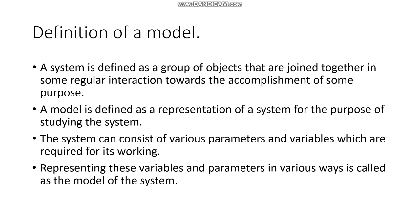A system can consist of various parameters and variables which are required for its working. Representing these variables and parameters in various ways is called a model of the system. So basically, in order to understand the system better, we need a representation for the entire system, and this representation is called a model.